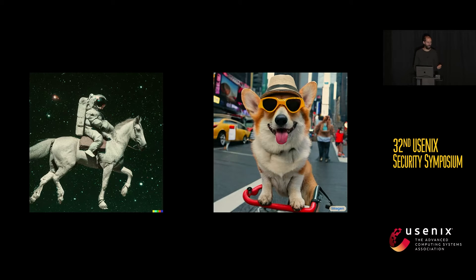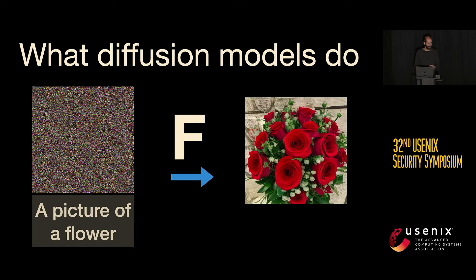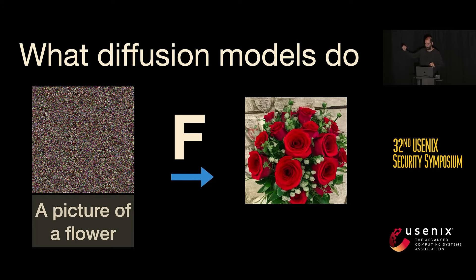What's also really nice is it's relatively easy to use them. Basically all you have to do is feed in some noise — a sample from a Gaussian — and a text description of what you want. For the purpose of this talk, it really doesn't matter how they work. This goes into a black box and out comes a very high-quality image. Training them is fairly complicated, but we're not going to worry about that.